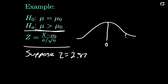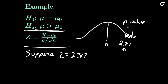So we get a z-value of 2.87 — it's out there somewhere. Our p-value is going to be the probability of getting this value, or something even more extreme, something even farther to the right in this setting, because our alternative is mu is greater than mu-naught. We look at the calculation of a p-value for different hypotheses in another video. But for this particular one, this area — you can find that from your standard normal curve — my p-value, to three decimal places, is 0.002.